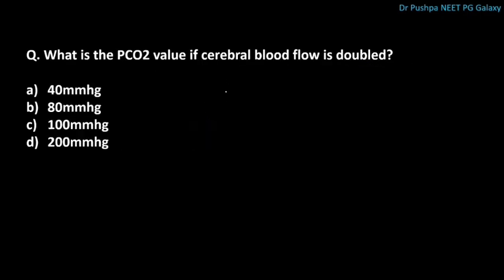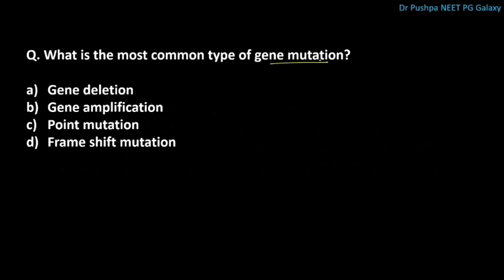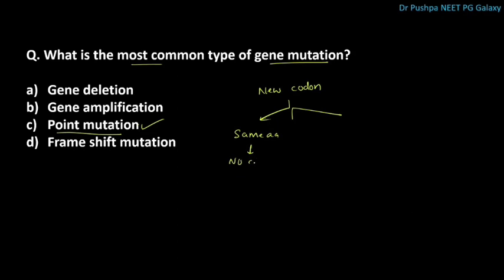What is the PCO2 value if cerebral blood flow is doubled? PCO2 is directly proportional to cerebral blood flow, so the correct answer is 80 mmHg. What is the most common type of gene mutation? The correct answer is point mutation, in which one base pair is replaced by another, forming a new codon. The new codon may code for the same amino acid — this is silent mutation — or there is no change in the protein.